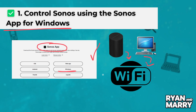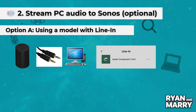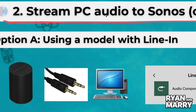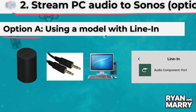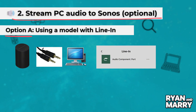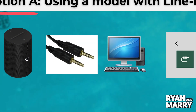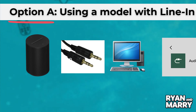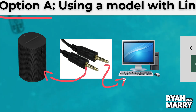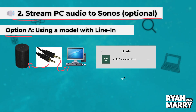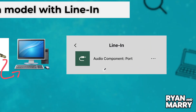Step 2: Stream PC audio to Sonos. Option A: Using Line-In. If you have a Sonos 5 or Sonos Port, plug an AUX or RCA cable from your PC into the Sonos input. In the Sonos app, go to Browse, Line-In, and start playing audio from your PC.